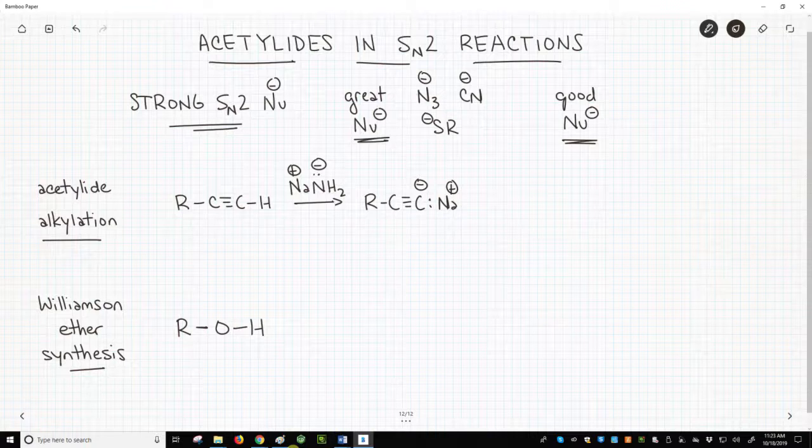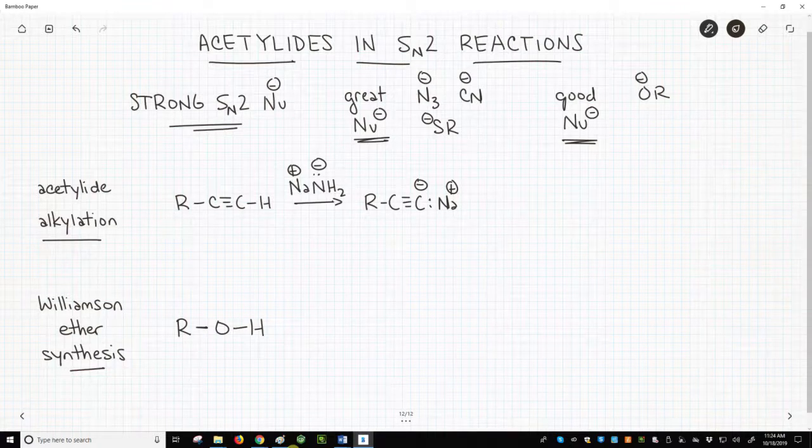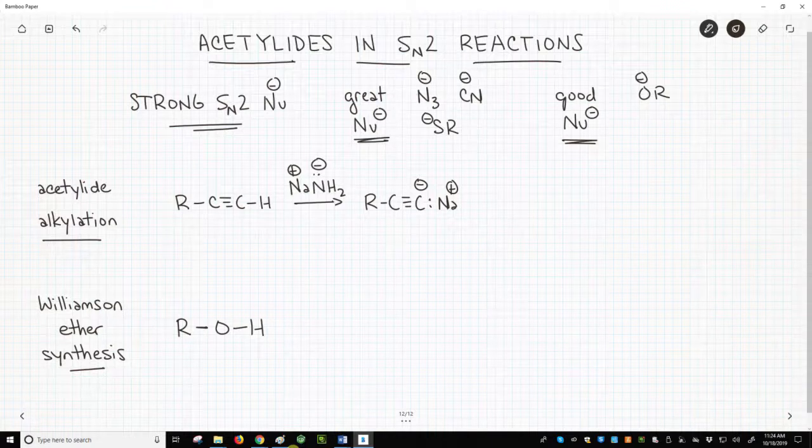The good nucleophiles, like alkoxides, the oxygen anions, are more basic and best used on primary halides. With secondary halides, you'll get mostly E2 products.